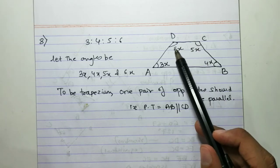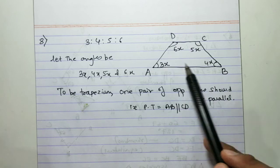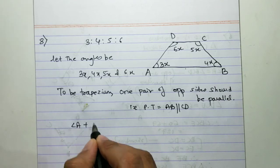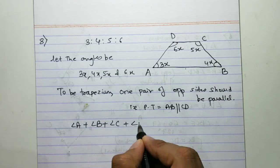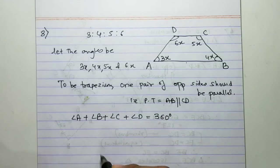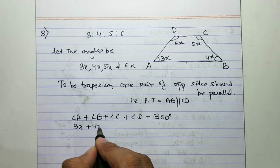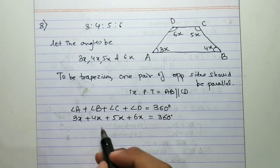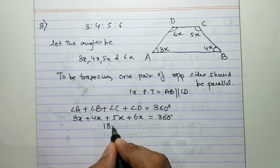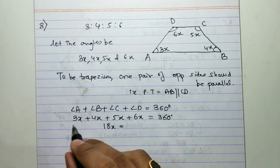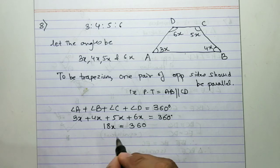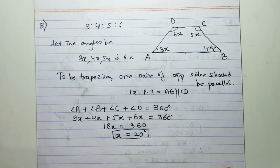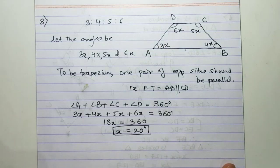The sum of all angles of a quadrilateral is 360 degrees. So angle A + angle B + angle C + angle D = 360°. Therefore 3x + 4x + 5x + 6x = 360°. This becomes 18x = 360°, so x = 20 degrees.